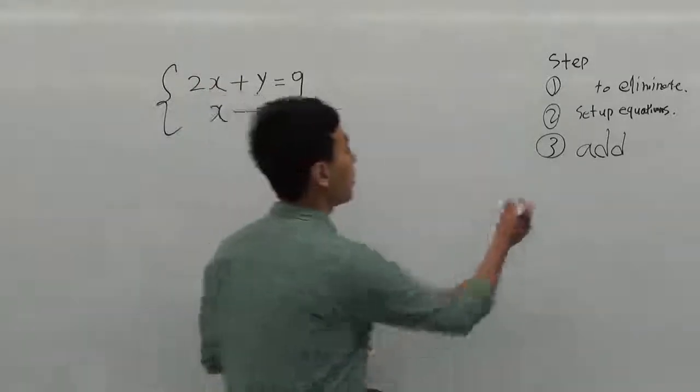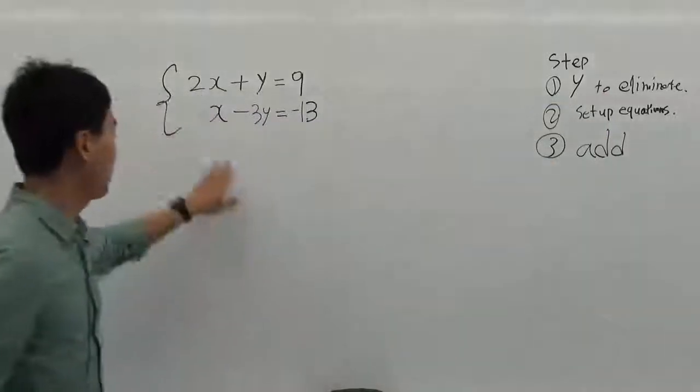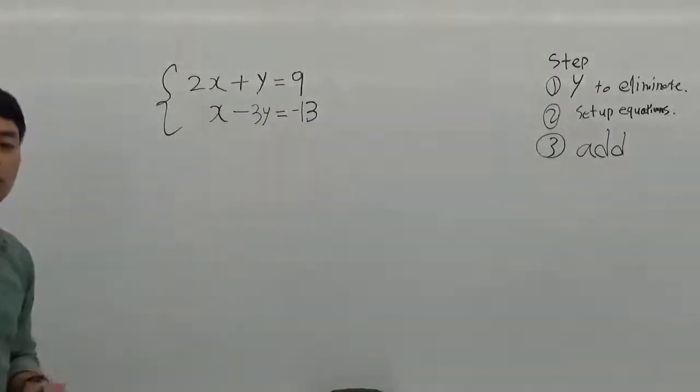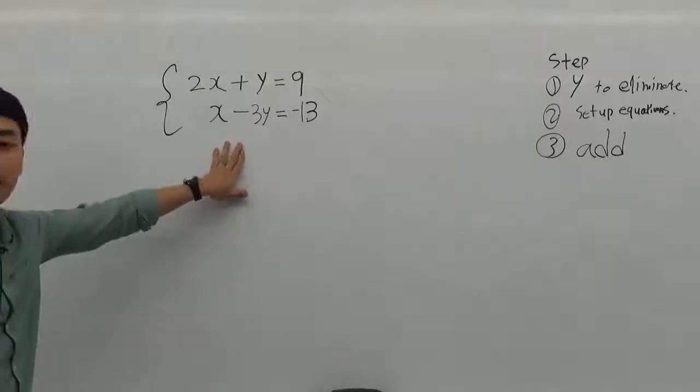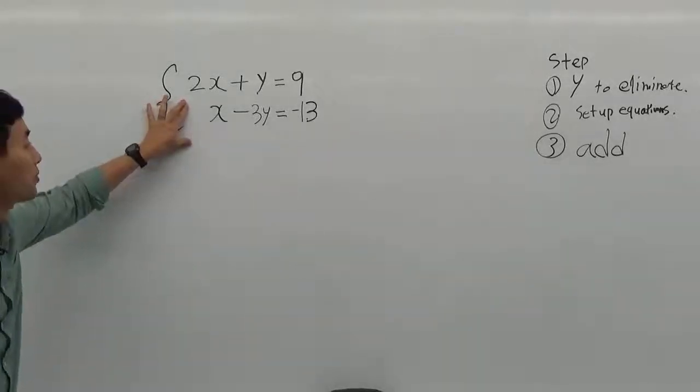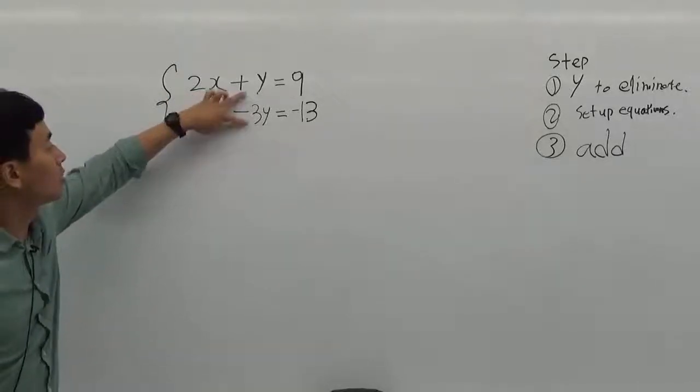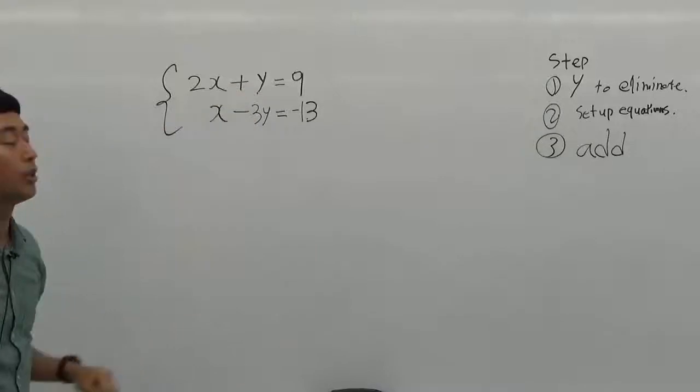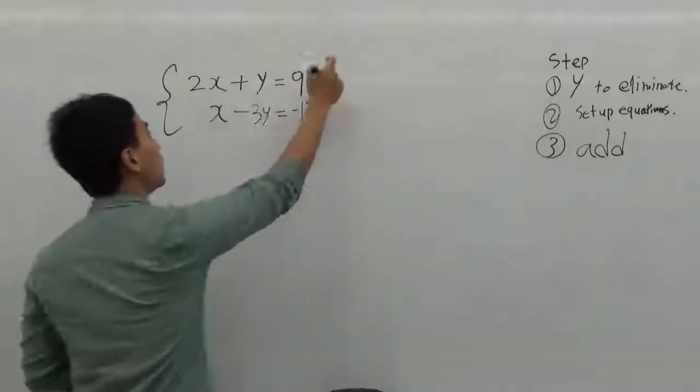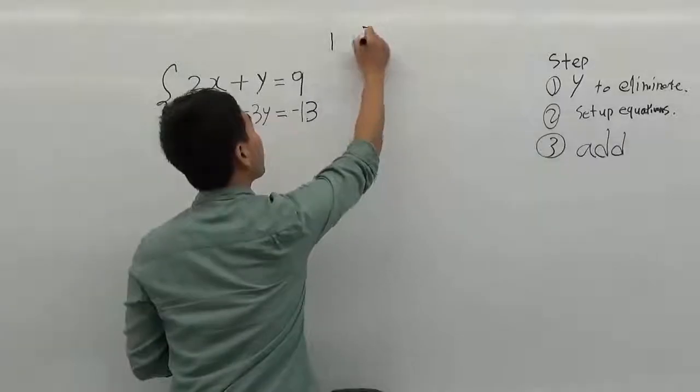The first step, I choose y to eliminate. The second step is we have to set up the equation so that y can be eliminated in the equations, which means their sign is already set up. We have to set up the same coefficients. The coefficient is 1, and the second equation's coefficient is 3.